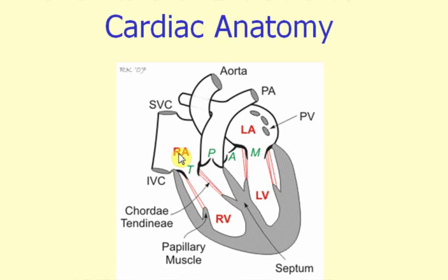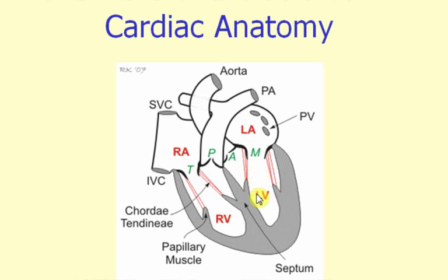The right atrium is separated from the right ventricle by a valve. This valve opens and closes to permit blood to flow from the right atrium into the right ventricle, and this valve is called the tricuspid valve. The left atrium is separated from the large left ventricle by a valve that is called the mitral valve.